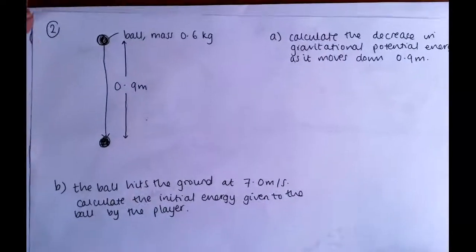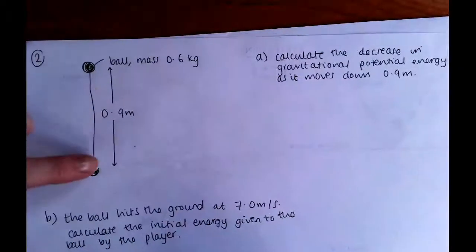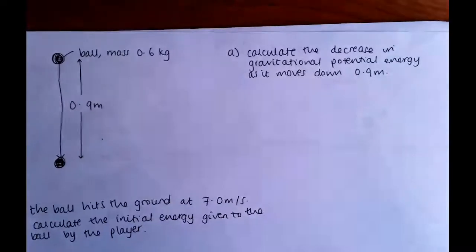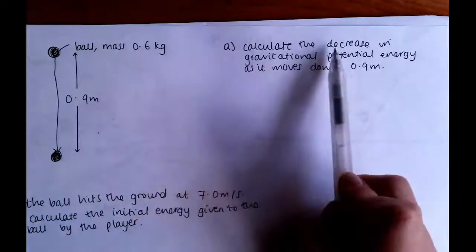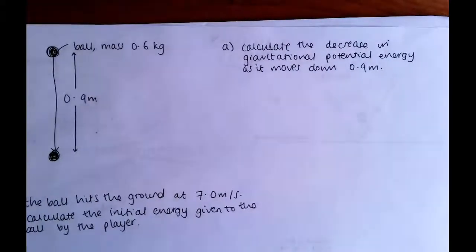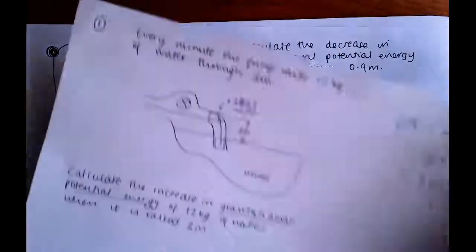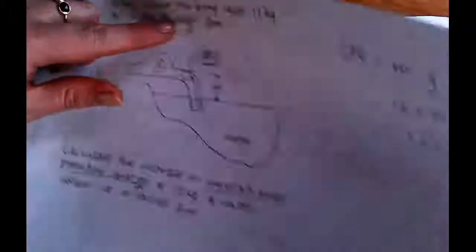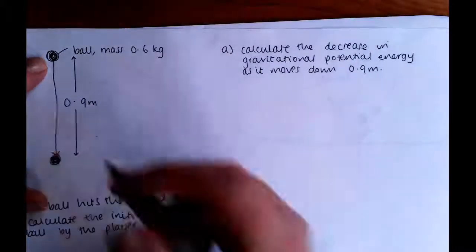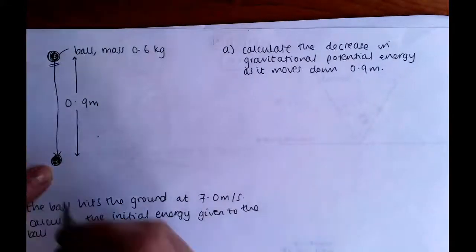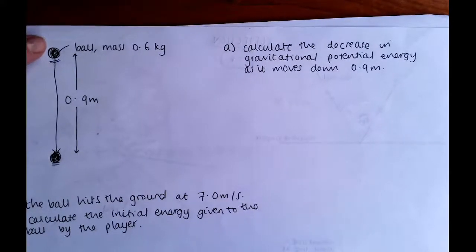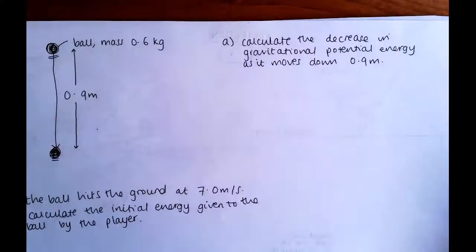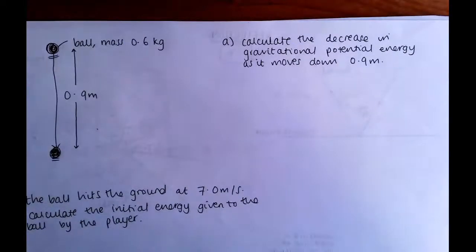Question two was a ball that is falling through 0.9 metres. The first part of the question asks you to calculate the decrease in gravitational potential energy as it moves down 0.9 metres. This is the opposite to the first question. In the first question, the water was moving up and it got more potential energy. In this question, the ball starts at height and falls down to the bottom, so it has now lost the potential energy it had from being at a height. You still use the same equation, but instead of gaining that energy, it's minus that amount.